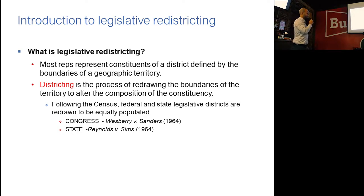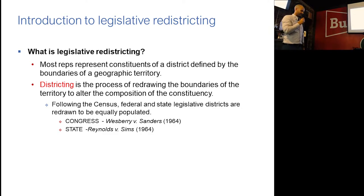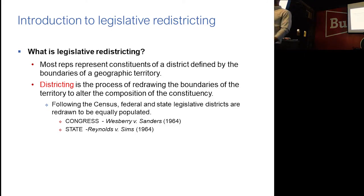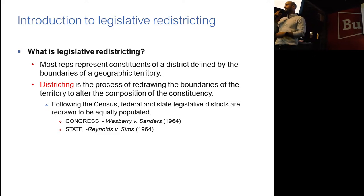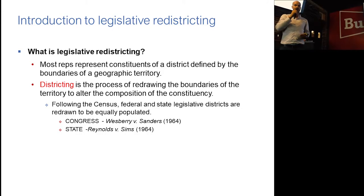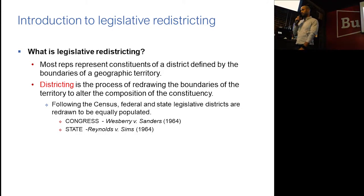According to Westbury v. Sanders and Reynolds v. Sims — two Supreme Court cases from the 1960s — congressional districts and state legislative districts have to be redrawn. So every time we get the census and a new count of where people live, we can readjust the districts to make sure that they're equally populated.